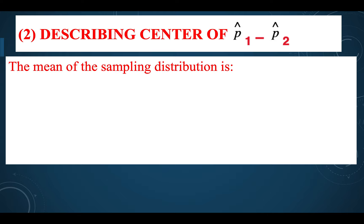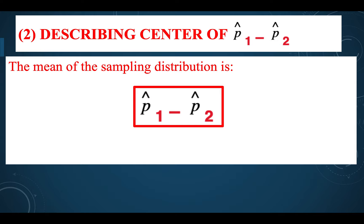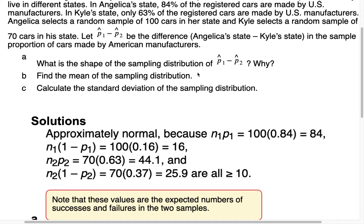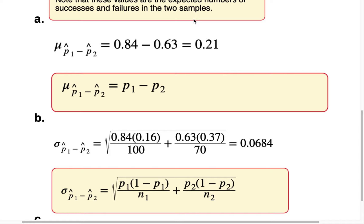Now let's describe the center of the difference of proportions. The center is described by the mean — we use the mean when we have a normal distribution. To find the mean of the sampling distribution of p̂₁ minus p̂₂, all you do is compute p₁ minus p₂. That's it. So for part B of our example, we need to find the mean of the sampling distribution.